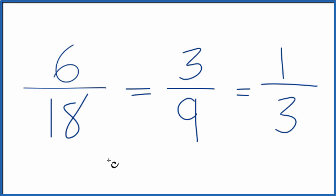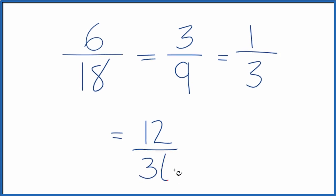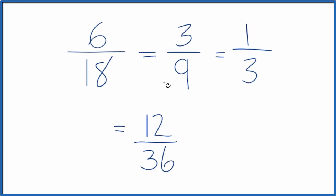Let's take 6 18ths, and instead of dividing the numerator and denominator by 2, let's multiply. 6 times 2, that equals 12. 18 times 2, that's 36. And 12 over 36, that's another equivalent fraction for 6 18ths.